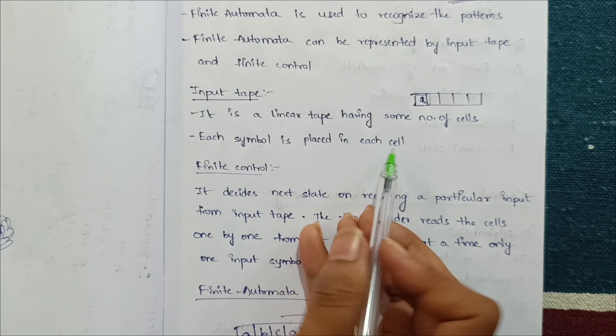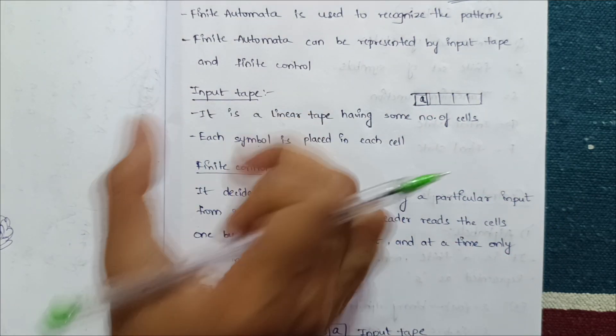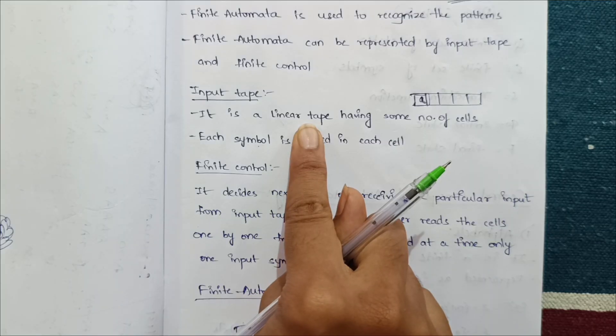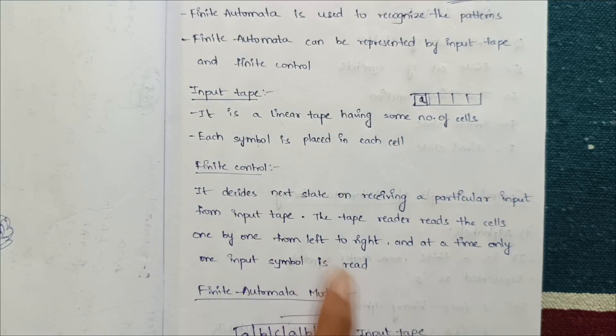So this is about the input tape. Input tape is nothing but a linear tape having a number of cells, and in each cell each symbol is placed. Finite control is next.